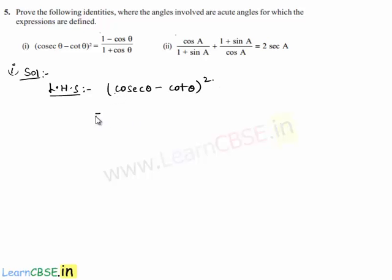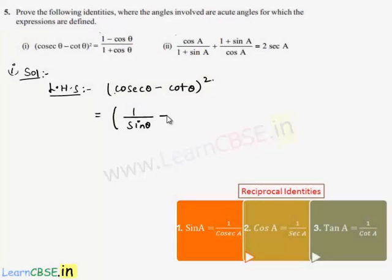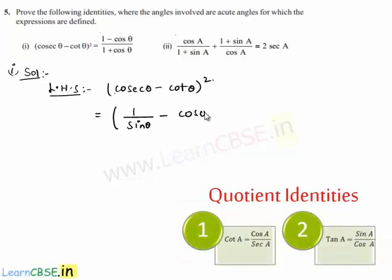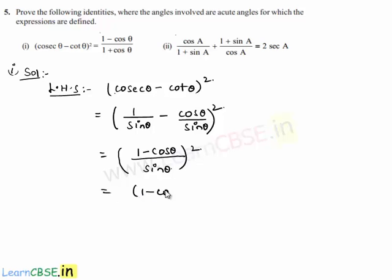So let us write it as 1 by sin theta minus cos theta by sin theta, whole square. Taking sin theta as the common denominator, the numerator becomes 1 minus cos theta, giving us (1 minus cos theta) whole square divided by sin squared theta.